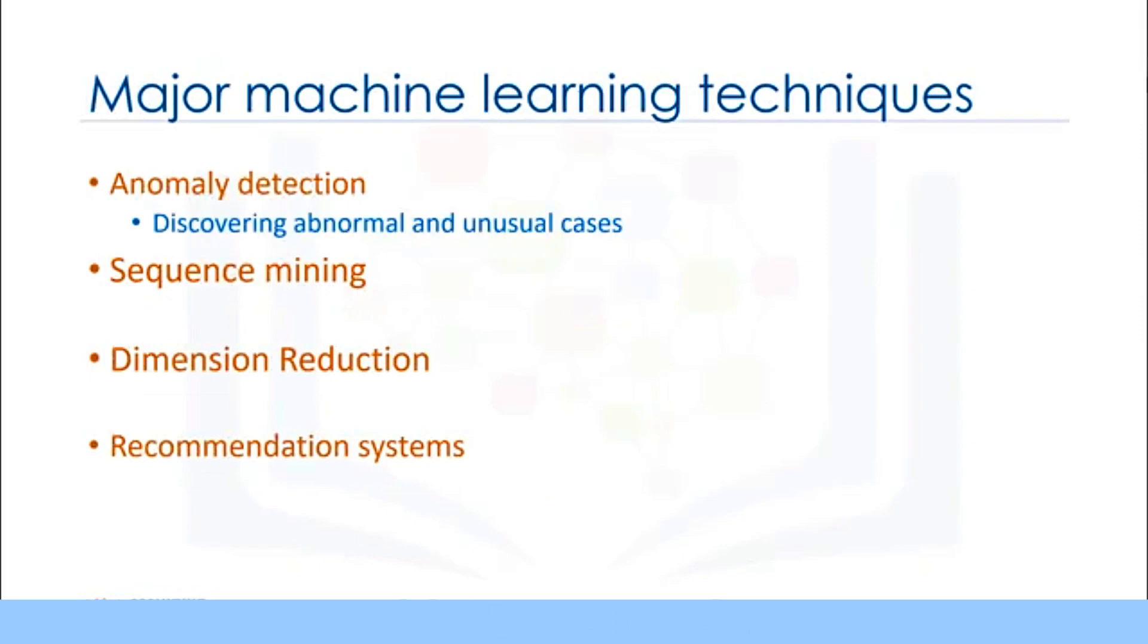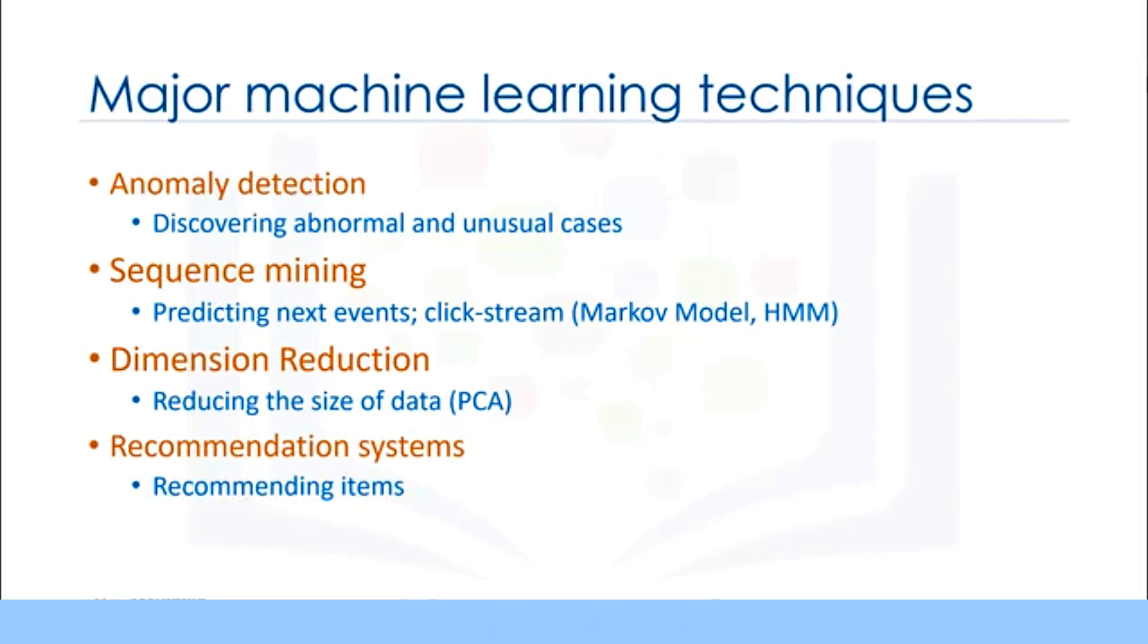Anomaly detection is used to discover abnormal and unusual cases, for example it is used for credit card fraud detection. Sequence mining is used for predicting the next event, for instance the click stream and websites. Dimension reduction is used to reduce the size of data. And finally, recommendation systems. This associates people's preferences with others who have similar tastes, and recommends new items to them, such as books or movies. We will cover some of these techniques in the next videos.